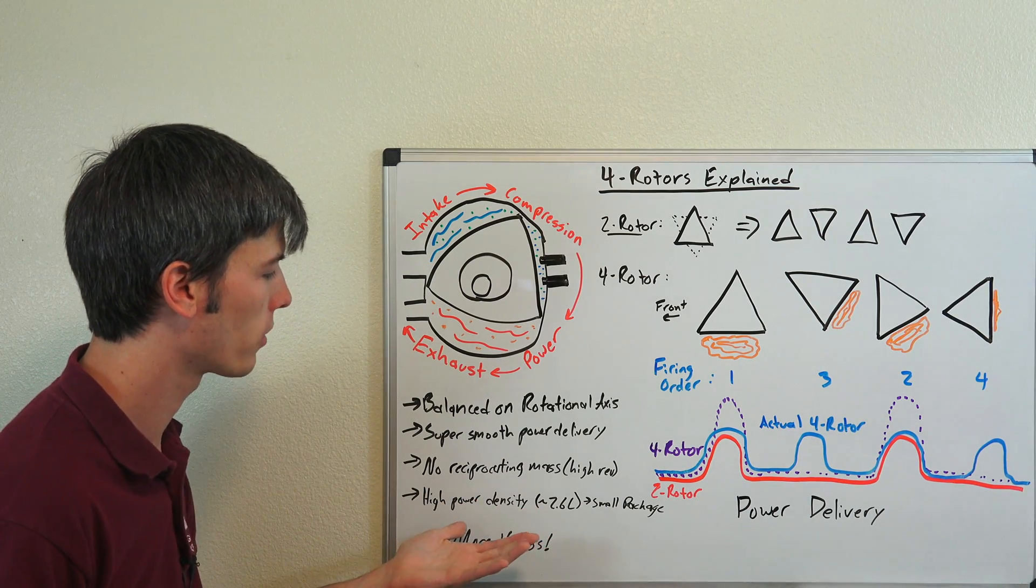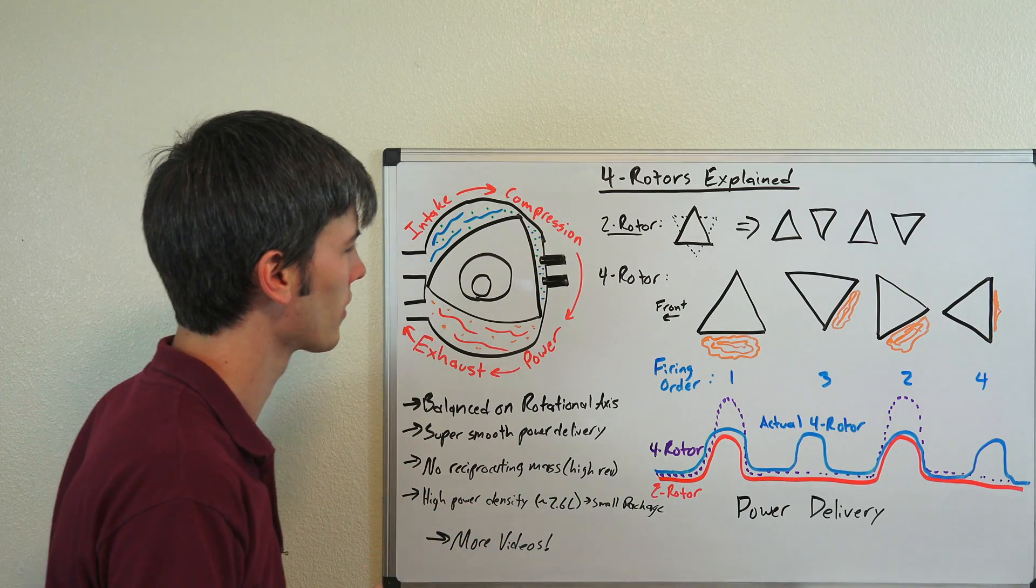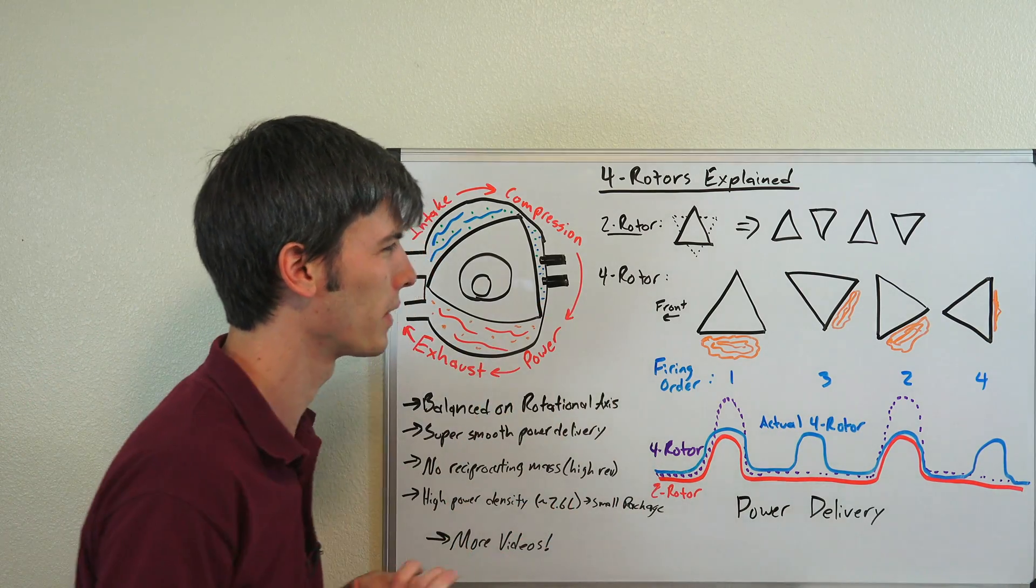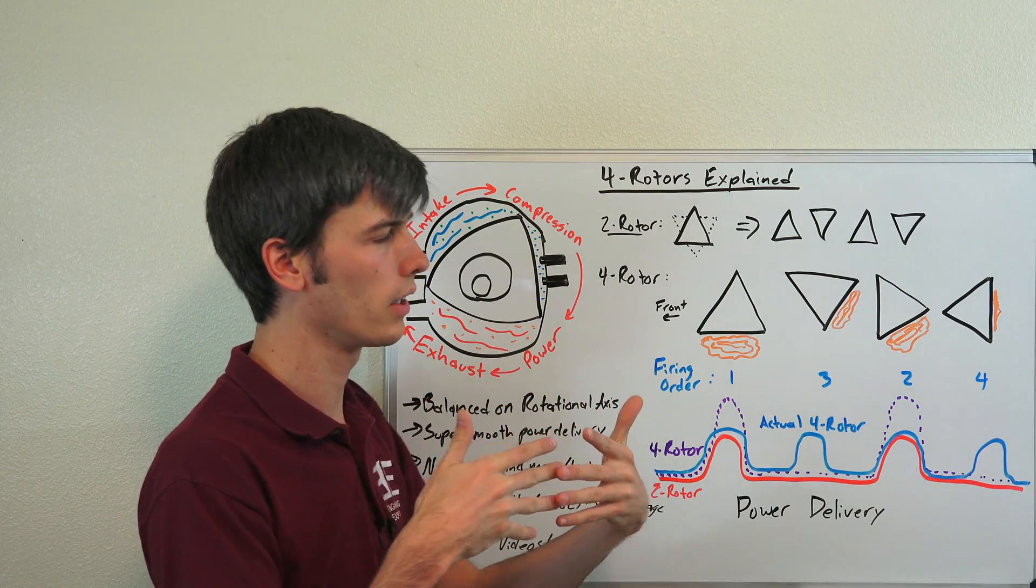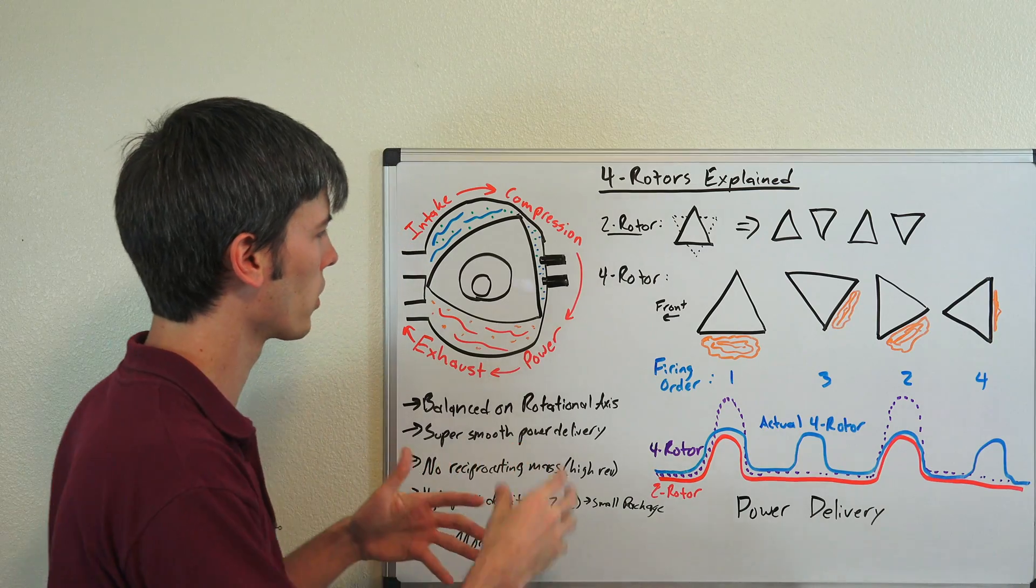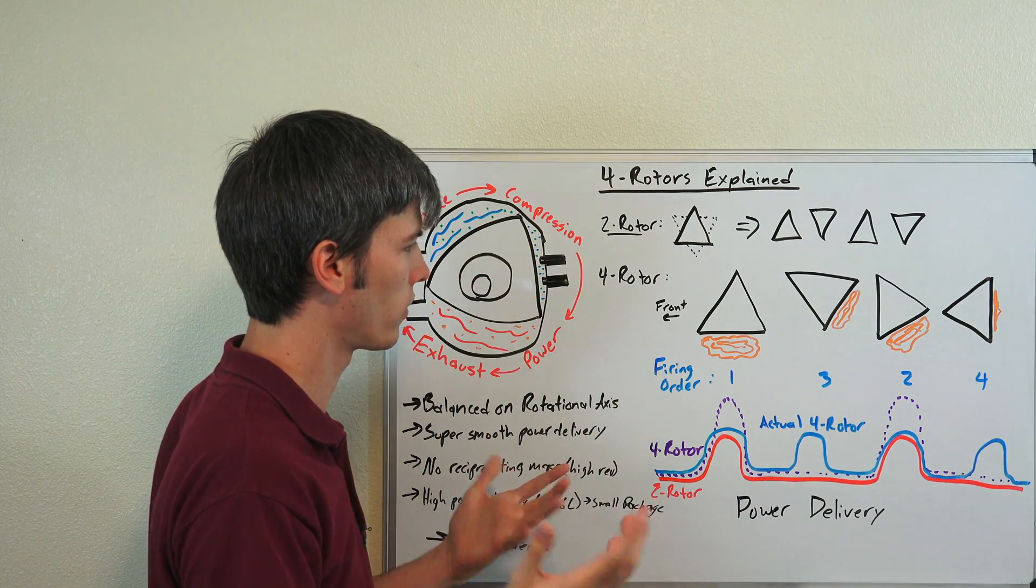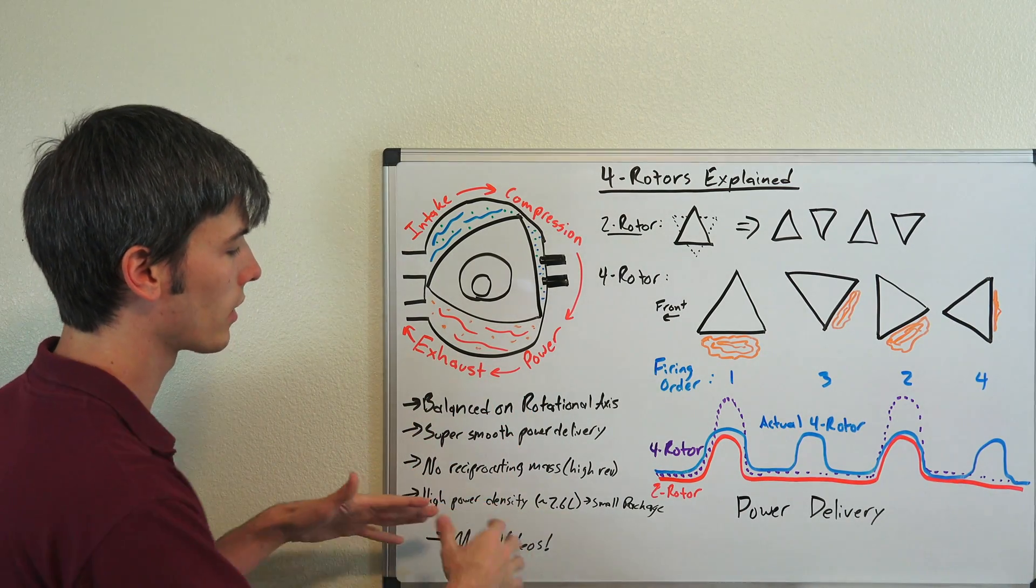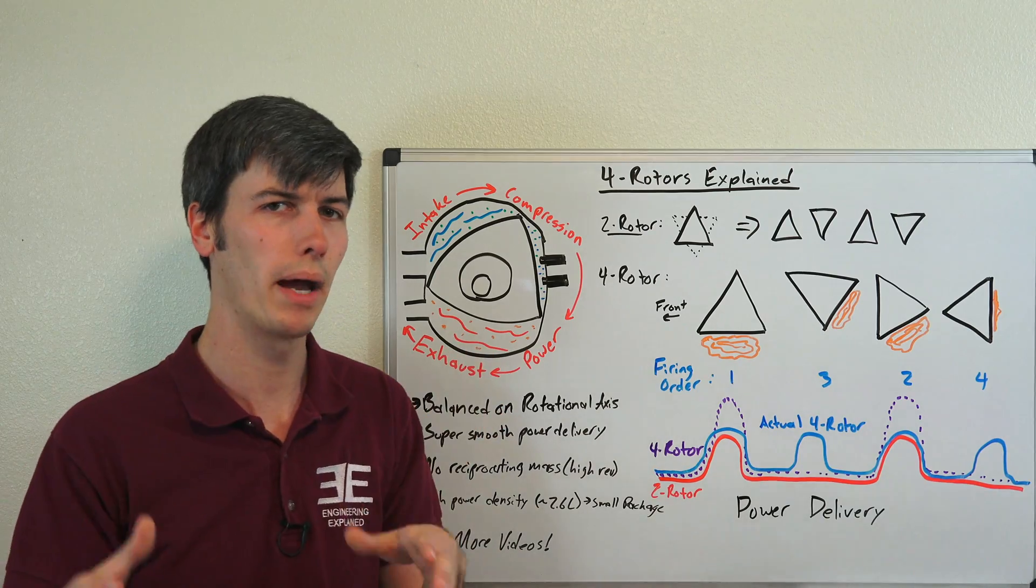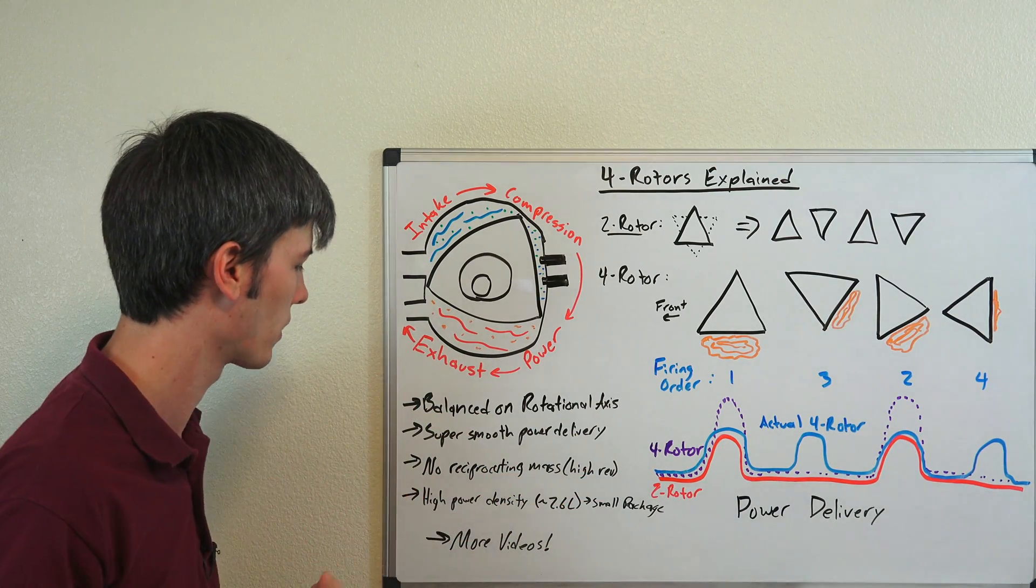You also have a very high power density. So these are the equivalent, you know, they're about 2.6 liter engines as far as how much displacement they actually have. Now it gets tricky when you're comparing that directly to a four-stroke piston cylinder because you have more power strokes per rotation of the eccentric shaft, essentially the crankshaft for this engine. But what this basically means is that you can get a ton of power in a very small package. So not a lot of weight and a lot of power, which is definitely ideal.